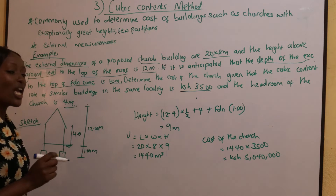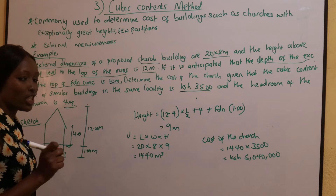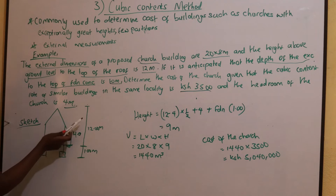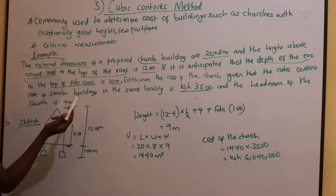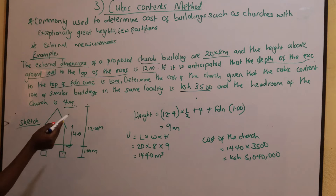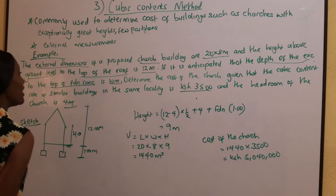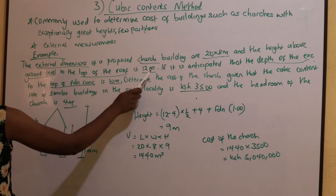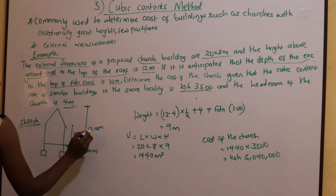For this problem, we need to do a sketch. In the sketch, the proposed church is 20 by 8 meters. The height from the ground level to the top of the roof is 12 meters.